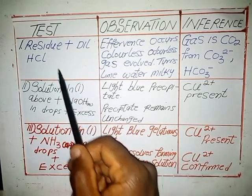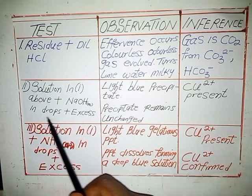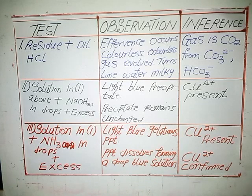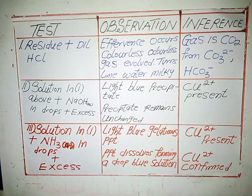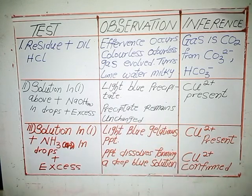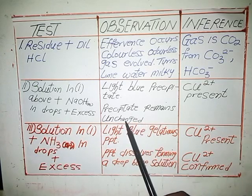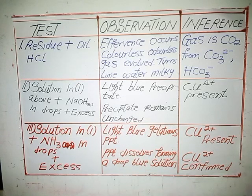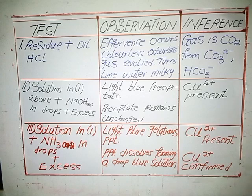Next, take the solution from test one above and add sodium hydroxide in drops, then in excess. When you add sodium hydroxide to this solution, you're trying to get a light blue precipitate. But in excess, the precipitate remains unchanged — or you can say no visible reaction. The inference here would be copper-2 ion present.